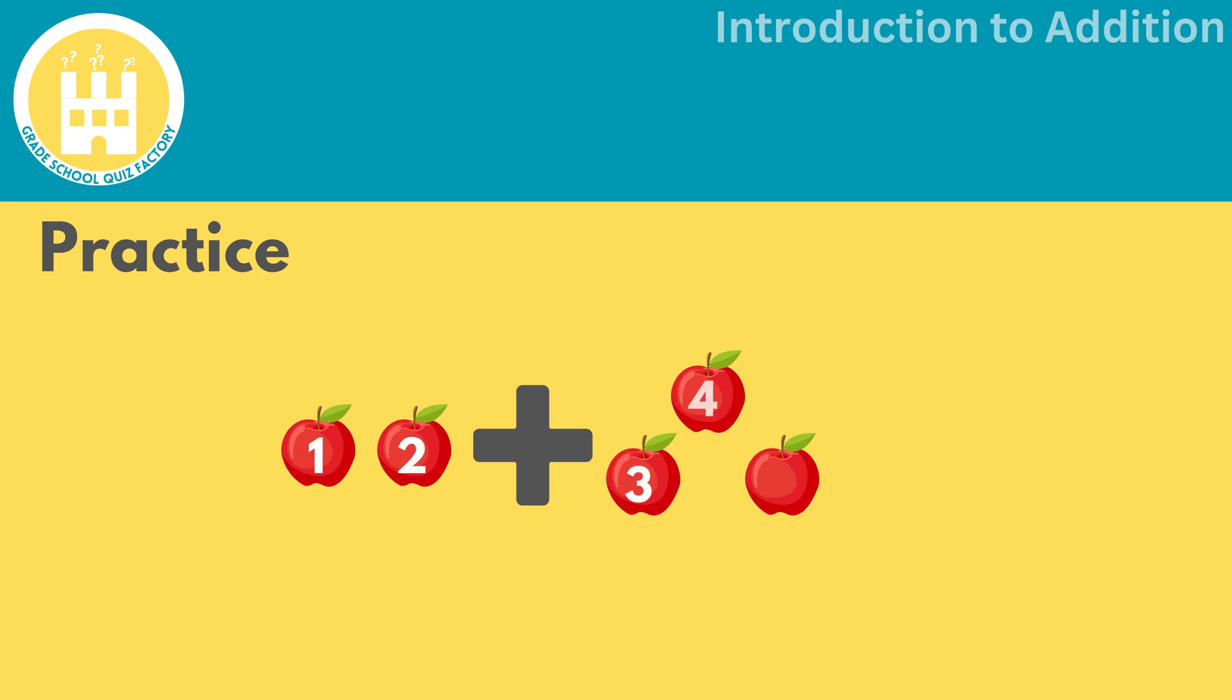One, two, three, four, five. So the sum of two and three is five.